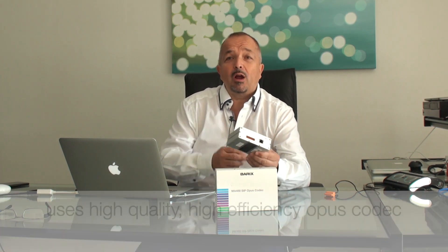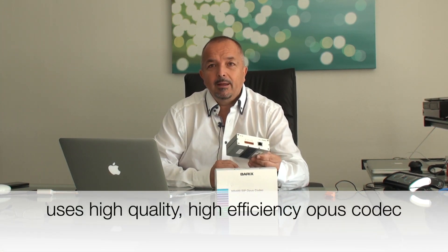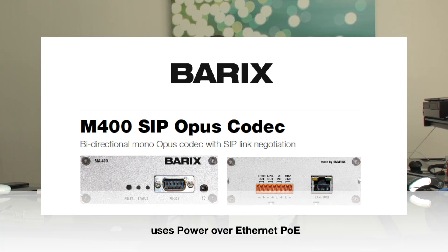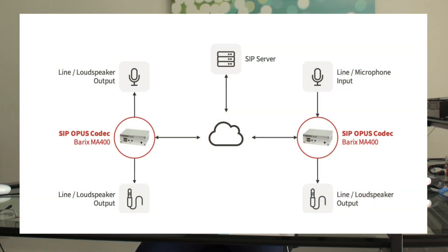Let's have a look at the MA400 SIP Opus Codec, a product that has taken radio broadcasters by storm. The MA400 SIP Opus Codec is a codec unit that provides bidirectional mono signals. Using the screw terminals I can either use a microphone input or line in, and I can have a line out or loudspeaker output right built into the unit.